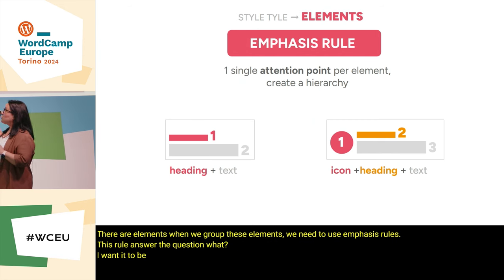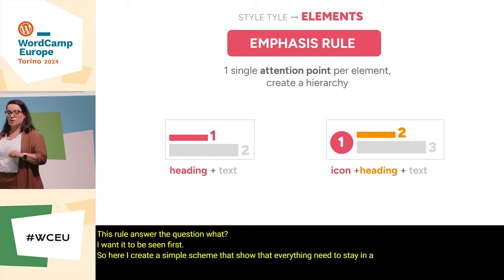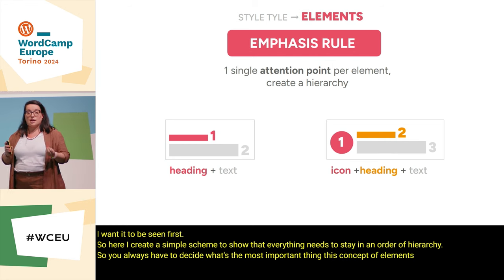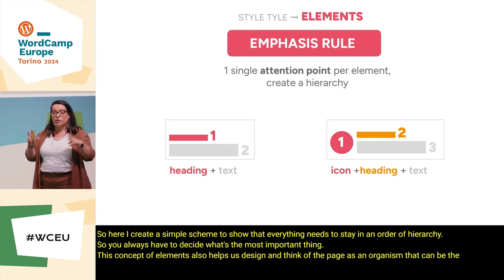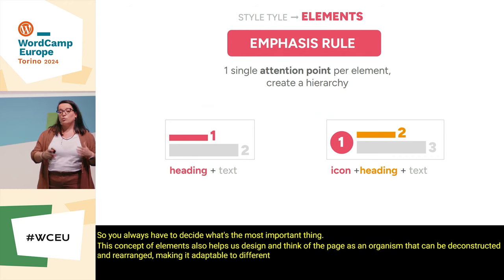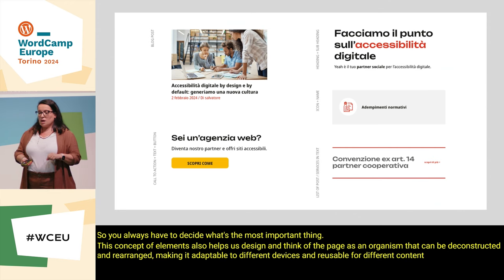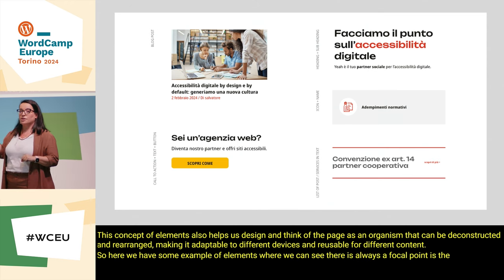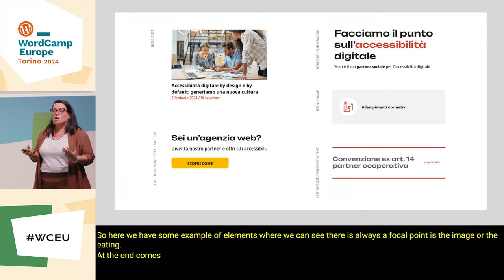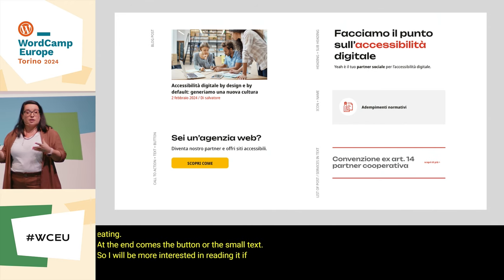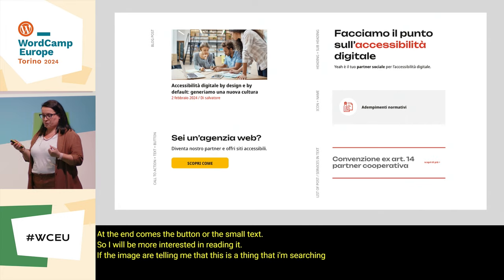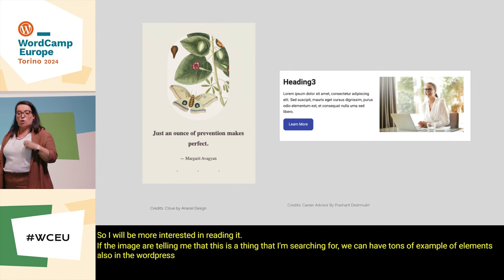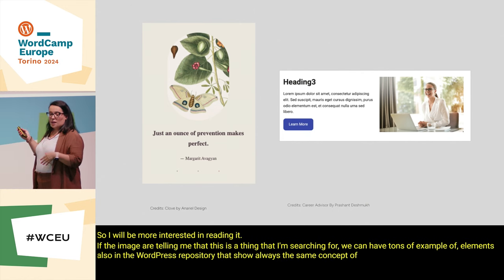Here I've created a simple scheme to show that everything needs to stay in order of hierarchy — you always have to decide what's the most important thing. This concept also helps us design and think of the page as an organism that can be deconstructed and rearranged, making it adaptable to different devices and reusable for different content. Here we have some examples of elements where there is always a focal point: the image or the heading, and at the end comes the button or the small text. You'll be more interested in reading it if the image tells you this is what you're searching for. We can find tons of examples of elements also in the WordPress repository, all showing the same concept of hierarchy and emphasis.